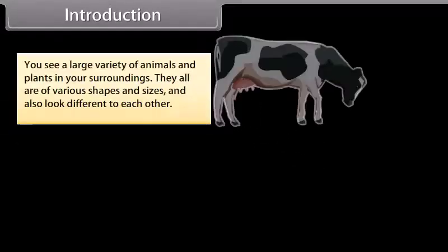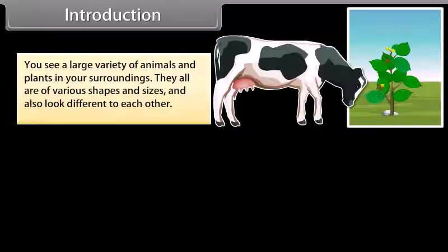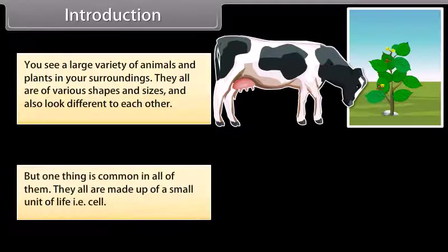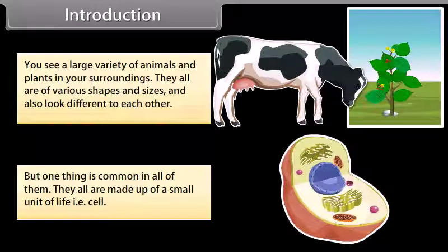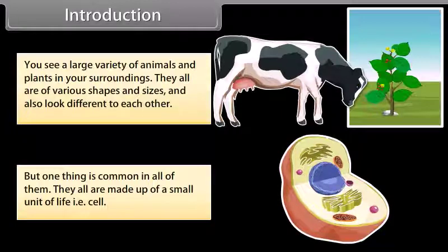You see a large variety of animals and plants in your surroundings. They all are of various shapes and sizes and also look different to each other. But one thing is common in all of them: they all are made up of a small unit of life, that is the cell. So in this module we are going to learn about cell and its structure.